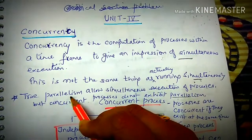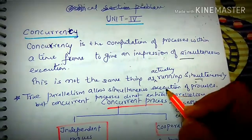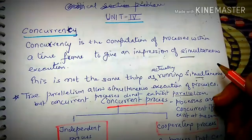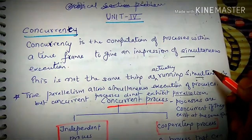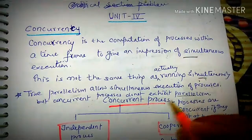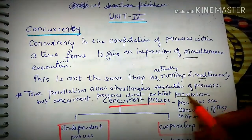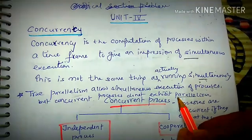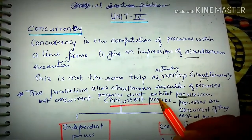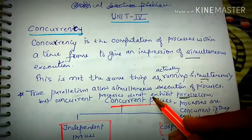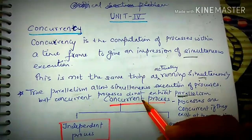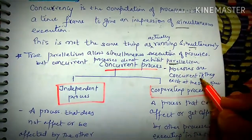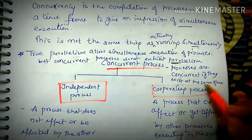Let's talk about true parallelism. What is true parallelism? True parallelism allows simultaneous execution of processes — the processes are genuinely simultaneously executed. However, concurrent processes do not necessarily exhibit parallelism. Processes are also concurrent if they exist at the same time.